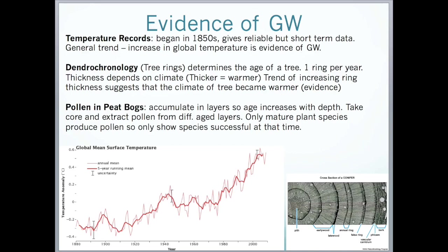Since the 1850s, we have been measuring temperatures around the world using thermometers, which gives us a reliable but short-term record of global temperatures. I have a graph here showing the global mean surface temperature since 1880. Although there are fluctuations, the general trend is upwards, and we can conclude that since 1880 the global mean surface temperature has been increasing, which can be used as evidence of global warming.